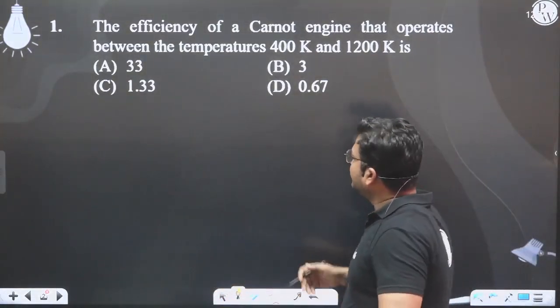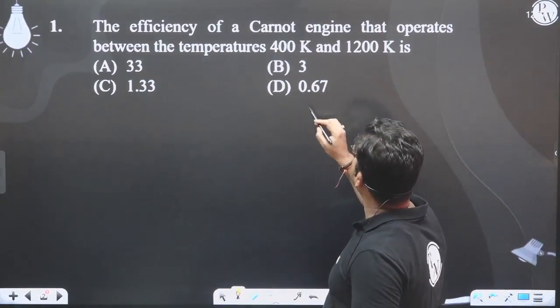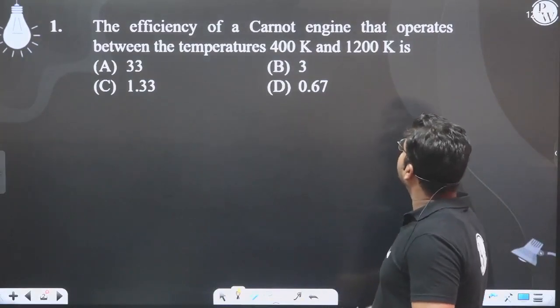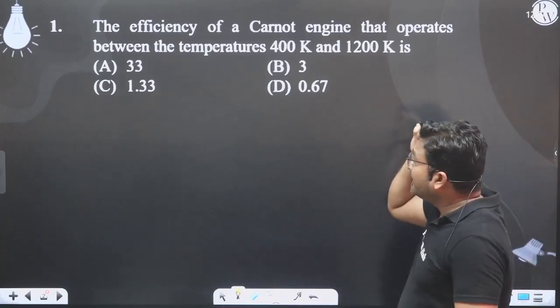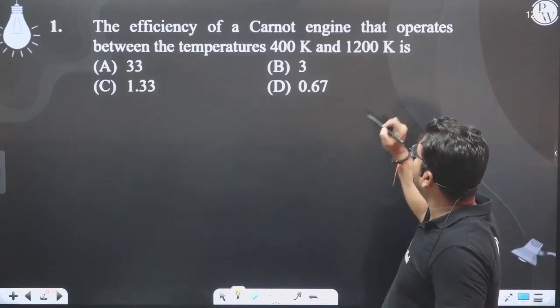The first question is the efficiency of a Carnot engine that operates between temperatures 400 Kelvin and 1200 Kelvin.